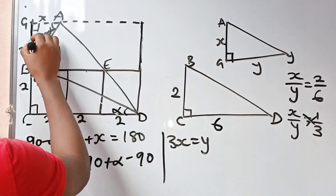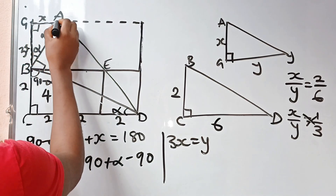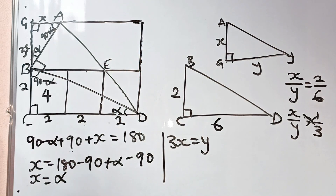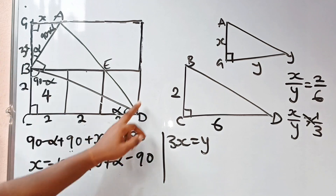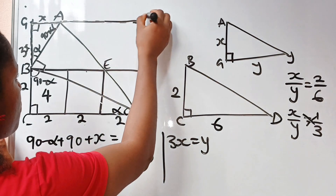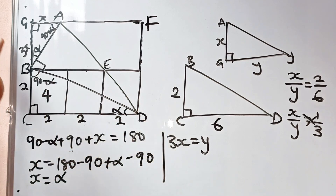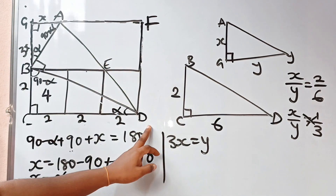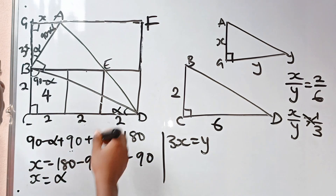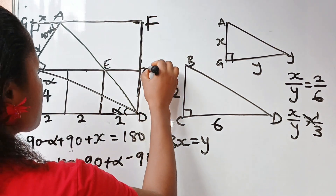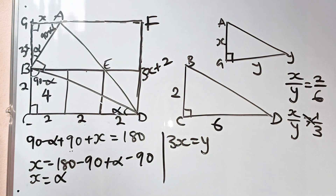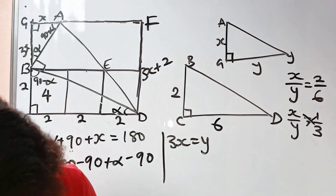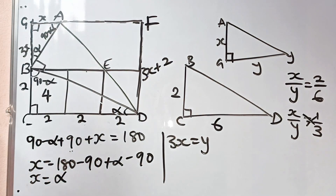Now let me complete the diagram. GB is 3X. If we call this point F, then FD equals GC because this is a rectangle. So FD equals 3X plus 2, meaning this length is 3X plus 2. And we have GA equal to X.